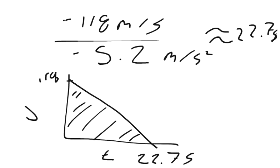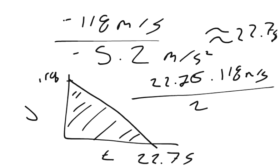It's base times height over 2. So, 22.75 seconds times 118 meters per second, divided by 2. 22.75 times 118, divided by 2, equals 1,342.25 meters.